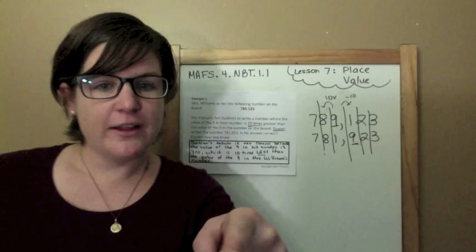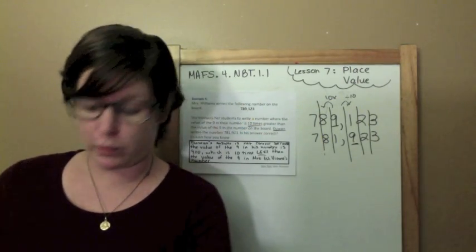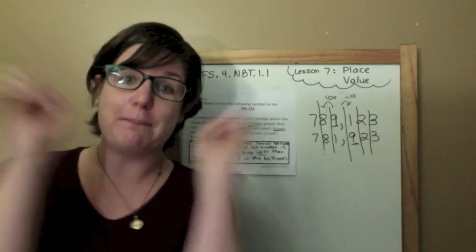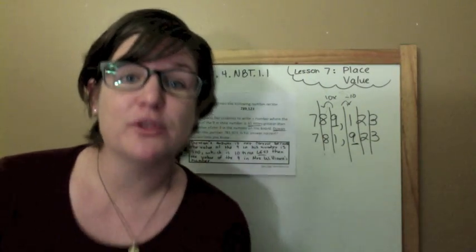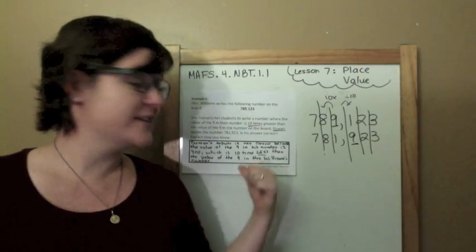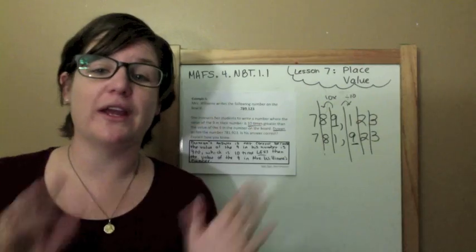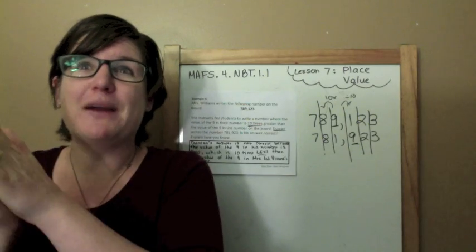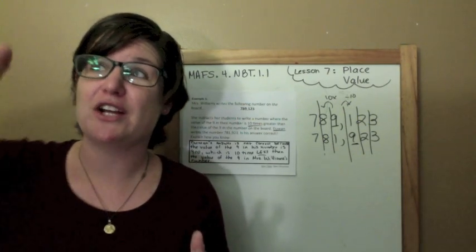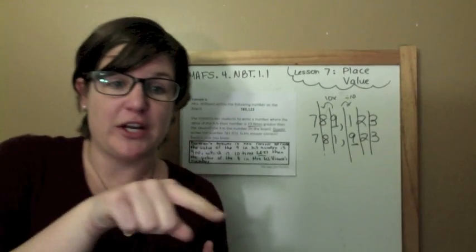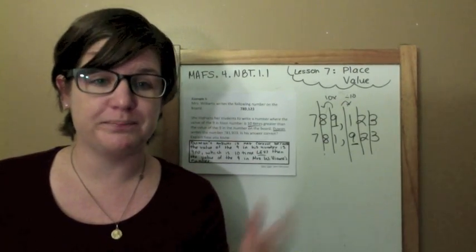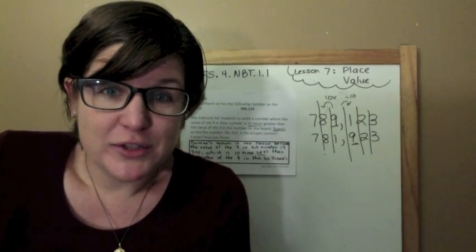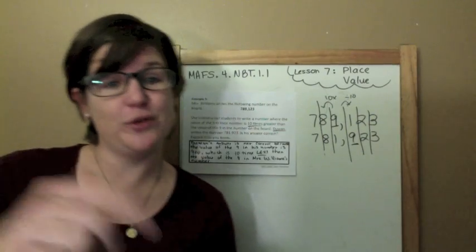That's example five. Before we go to our motivational message — I hope you noticed, because I've been putting it in your face, that 10 times greater is what we'll be looking for. For this standard, you're only going one place over, so it's always going to be 10 times greater. You might see 10 times less. But in fifth grade, you go 10 times and then 100 times. In fourth grade, you only have to worry about 10 times.